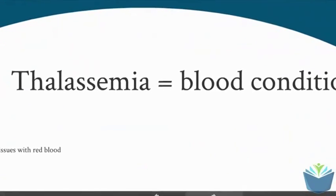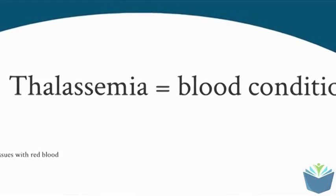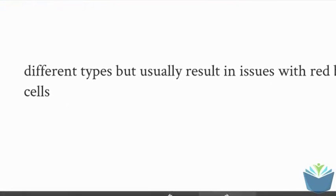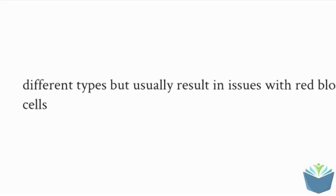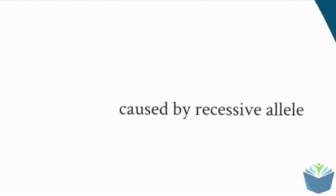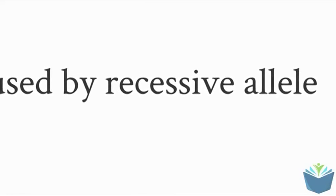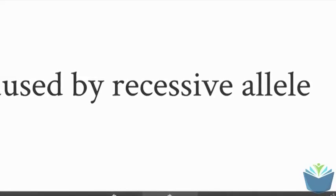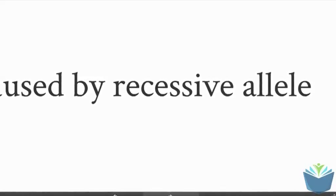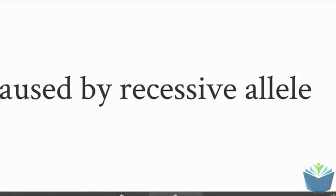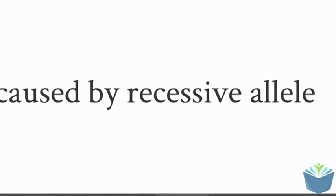The other type of condition that you are meant to know about is thalassemia. Thalassemia is a blood condition and it's specifically related to red blood cell formation and haemoglobin. Again, caused by a recessive allele. So it can essentially mean that people can't carry as much oxygen to their cells. So tiredness and some other symptoms that you would associate with lack of oxygen carriage arise here.